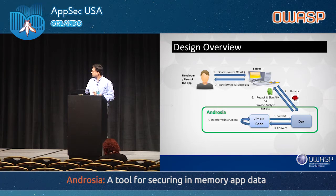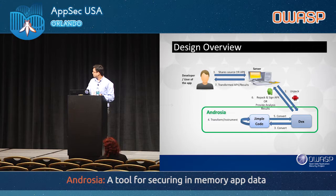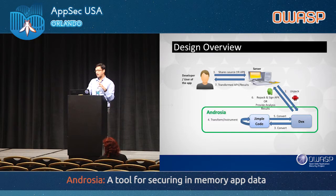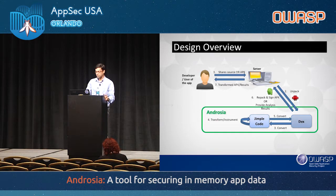The design overview: a developer can share source code or an APK. We unpack the APK, fetch the DEX code, convert it to Jimple, perform the analysis, instrument the Jimple code, package it back to Dalvik bytecode, create an APK with resources, and send it back to the developer.